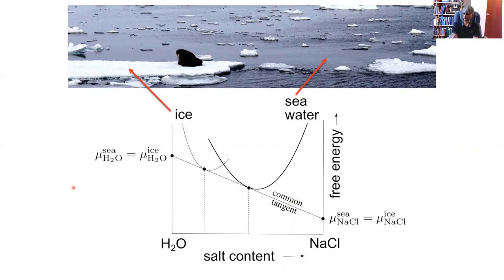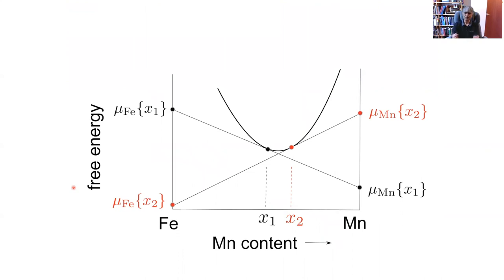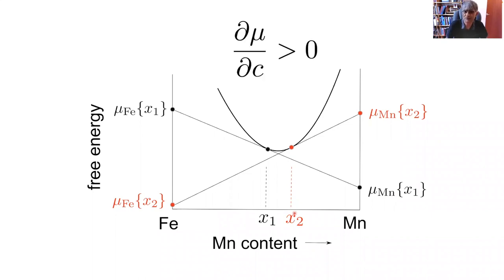For the iron-manganese system with a free energy curve of this shape, if there are two regions with different concentrations, there will clearly be a driving force — the difference in chemical potential between those two regions — to induce diffusion. Diffusion stops only when the chemical potentials become equal. In this case the chemical potential increases as concentration increases, so dμ/dc is greater than zero.